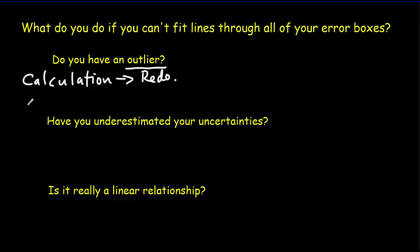Secondly, if you think that your outlier is due to some sort of procedural problem, you made some sort of error in your procedure while you're making that measurement, then your first option is, of course, to redo the measurement. Go back to the lab and redo the measurement.